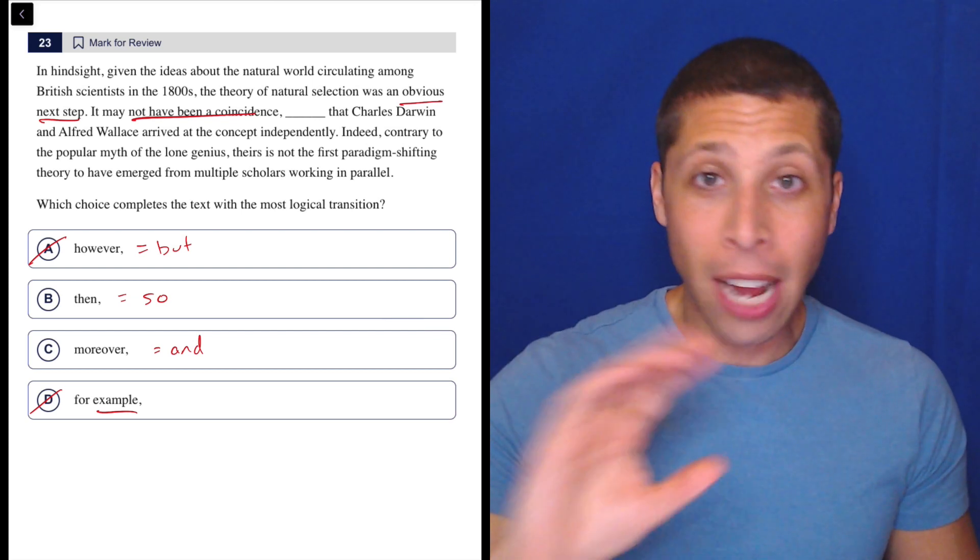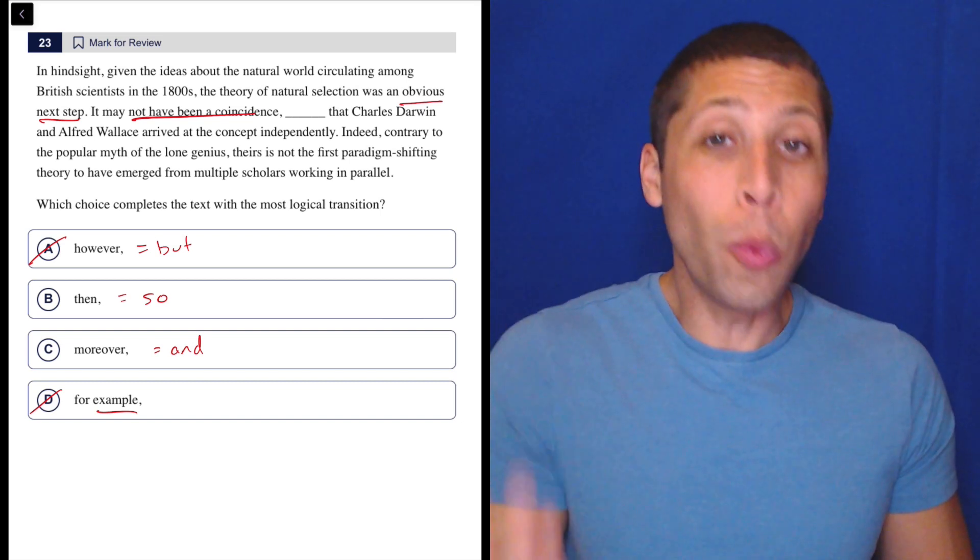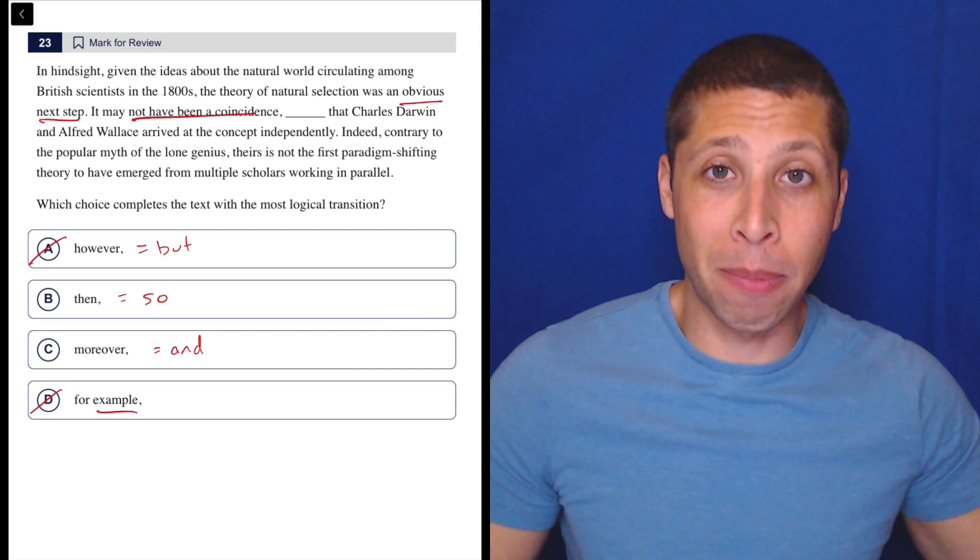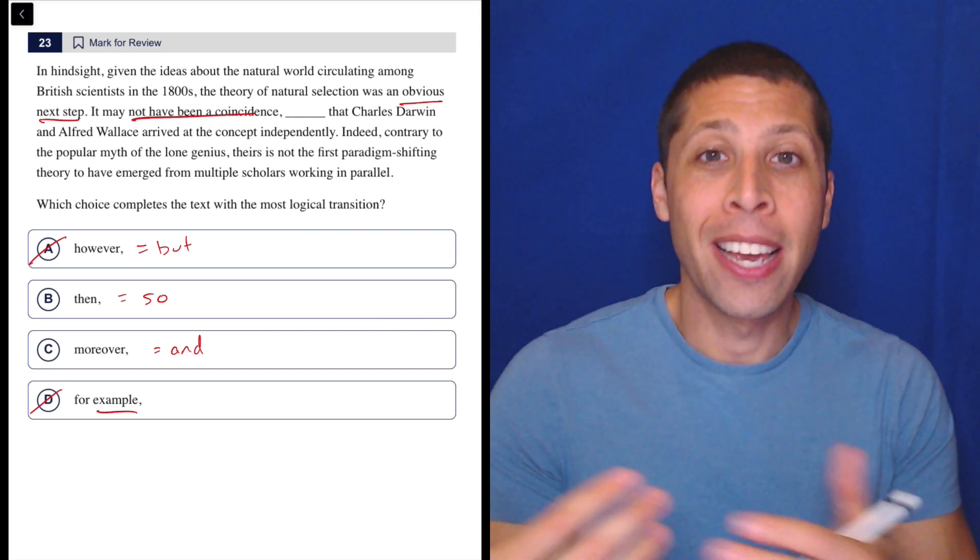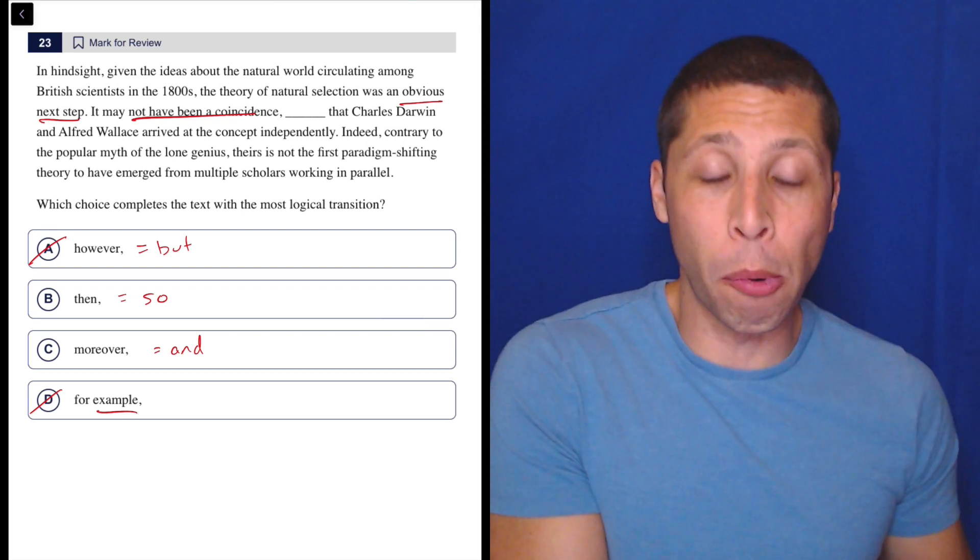It's obvious. Natural selection is an obvious next step. So it's not a coincidence that two people happened to figure it out at kind of the same time. That's the point here, right? It follows from the fact that it's obvious that multiple people would have figured it out.